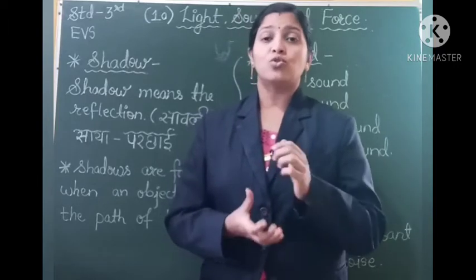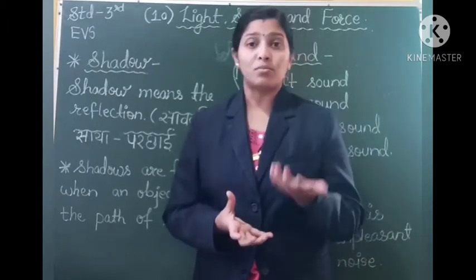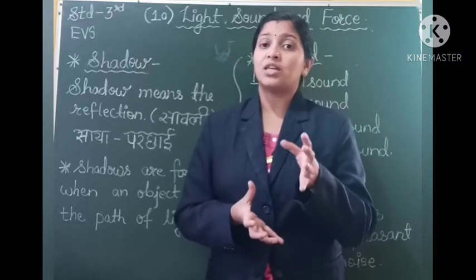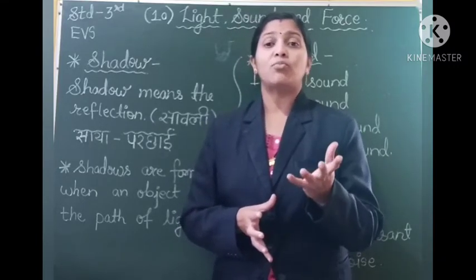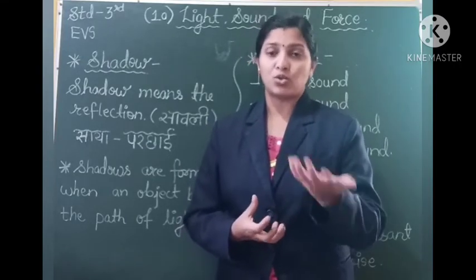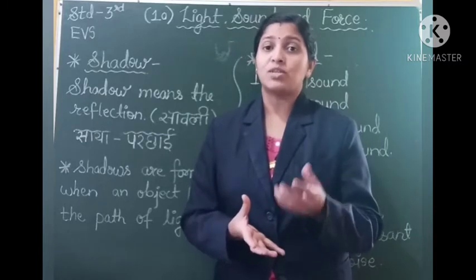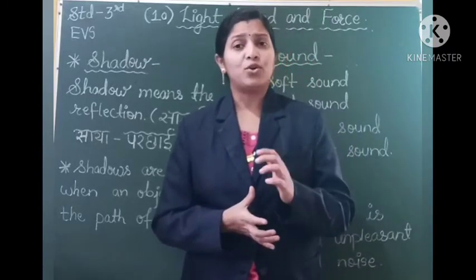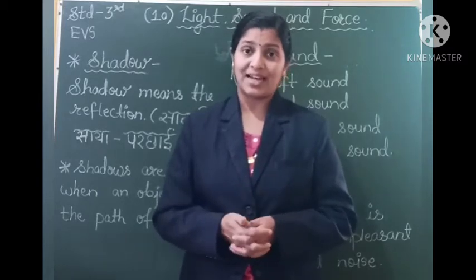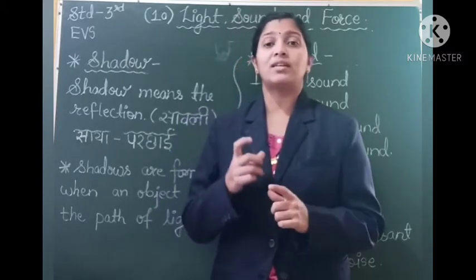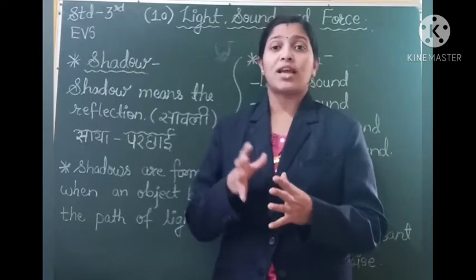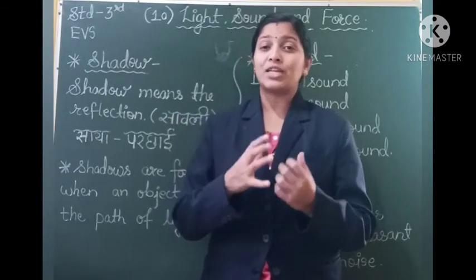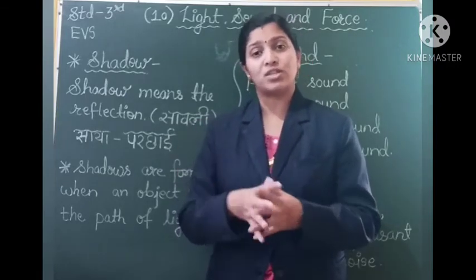All objects cannot form shadows. The objects which do not allow light to pass through them — we can see the shadows of only such objects. But the objects which are made of glass material allow the light to pass through them, and so shadows of glass objects cannot be formed. Also, shadows are seen on the opposite side of the light.